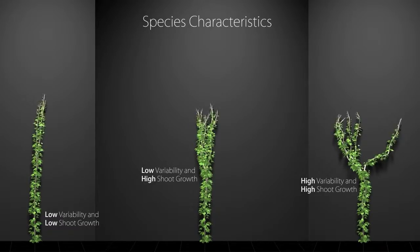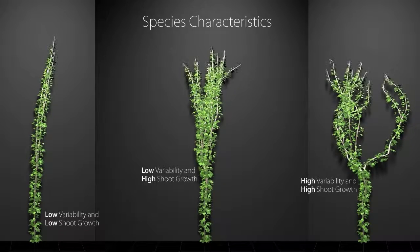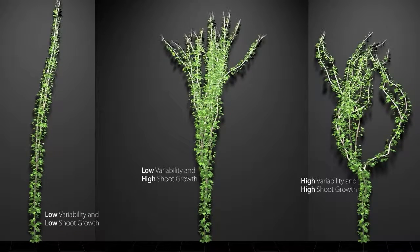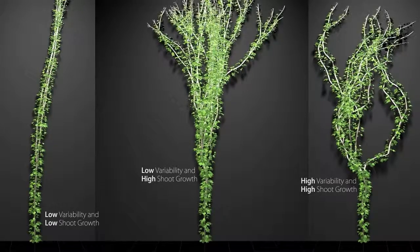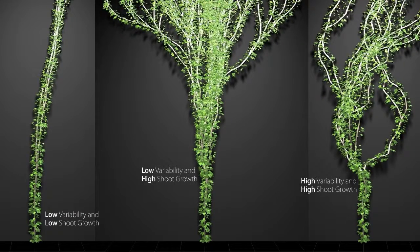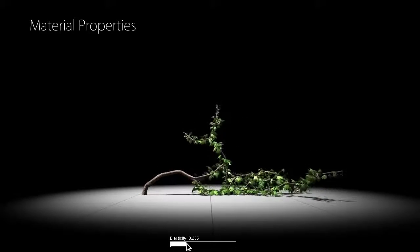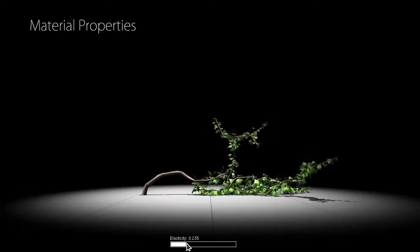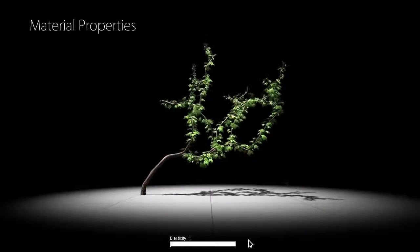Different species can be modeled by changing growth parameters within our framework. In particular, we model the probability of shoot growth and the variability of branch direction. In addition, we model material properties that change over time and alter the behavior of the plant during its lifetime.